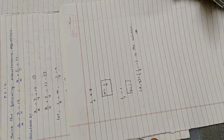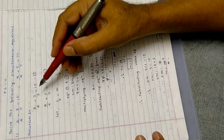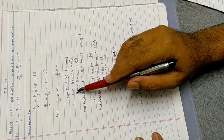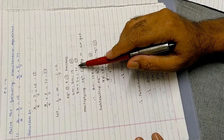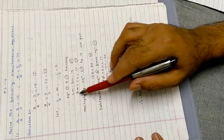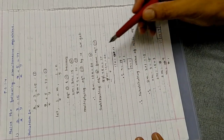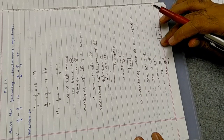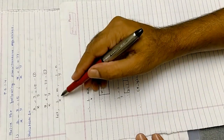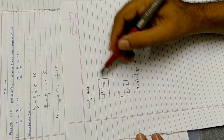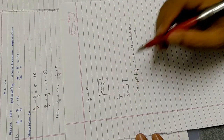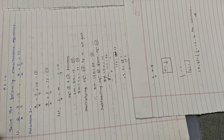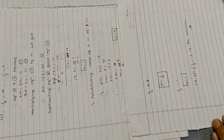Let us revise briefly: given 2 upon X minus 3 upon Y is equal to 15 and 8 upon X plus 5 upon Y is equal to 77, we substituted 1 upon X as M and 1 upon Y as N, giving equations 2M minus 3N equals 15 and 8M plus 5N equals 77. After solving by equating coefficients, we got N equals 1 and M equals 9. Resubstituting: X equals 1 upon 9 and Y equals 1. This conversion step is the key part — the rest of the solving procedure is already known. I hope it is clear to you all and you will enjoy solving these kinds of examples. Thank you.